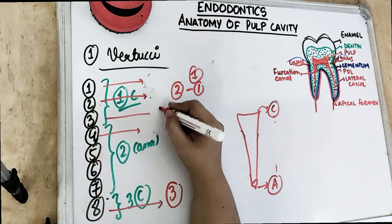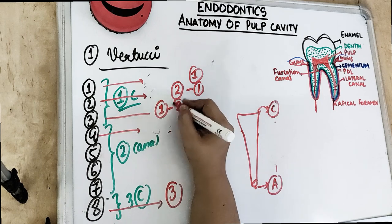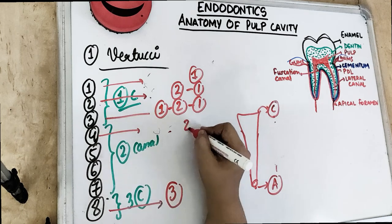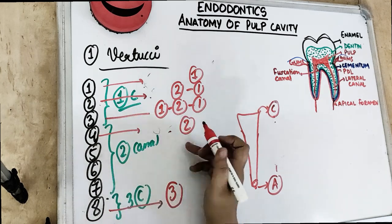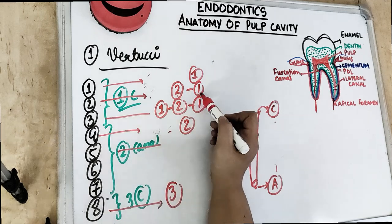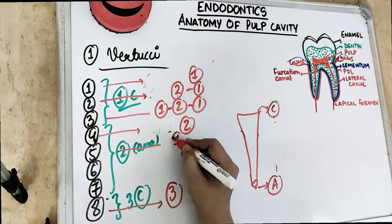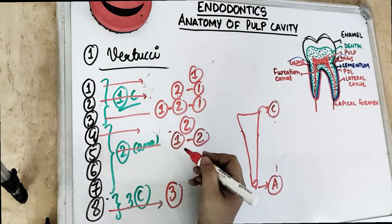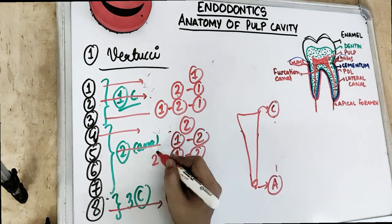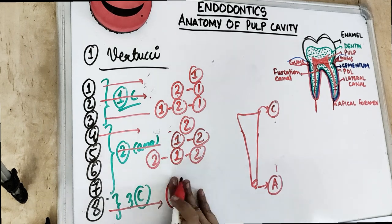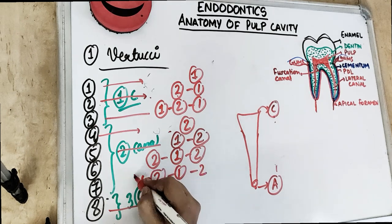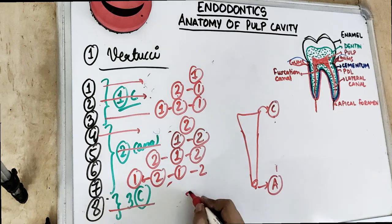You cannot repeat the same number consecutively. So if you have 1, the next number you add is 2; and if you have 2, the next you add is 1. Type 3 is 1 and 2 and then 1. Type 4 is 2. Type 5 is the reverse of type 2: 1 and then 2. Type 6 is 2, 1, 2. Type 7 is 1, 2, 1, 2. And type 8 is 3.